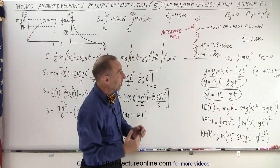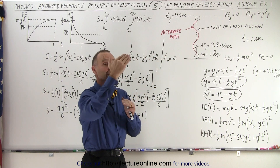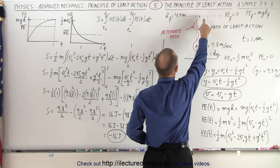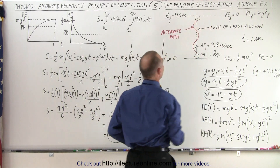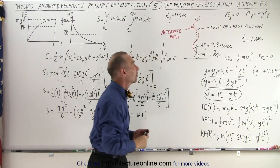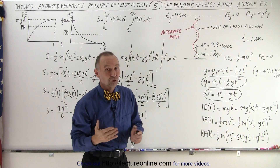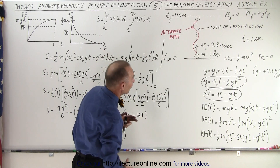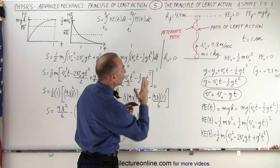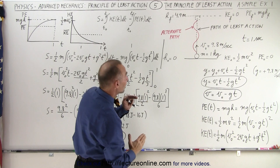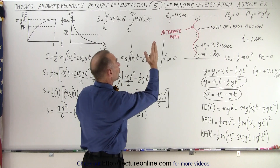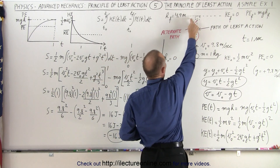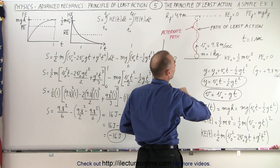After one second it will reach a maximum height where the velocity will be equal to zero, when it reaches a height of 4.9 meters. We assume under the action of gravity that the path of least action, since it started in a vertical direction, will be vertical until it reaches a point 4.9 meters higher than where it started.